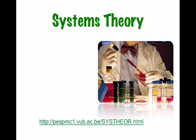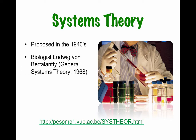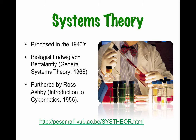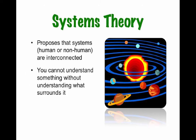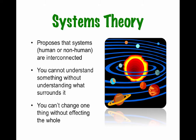Where did systems theory come from? It was first proposed in the 1940s. A biologist in 1968 developed general systems theory, and it was furthered in the introduction to cybernetics in 1956. Systems theory proposes that systems — human or non-human — are interconnected, and that you cannot understand something without understanding first what surrounds it. You can't change one thing without affecting the whole.